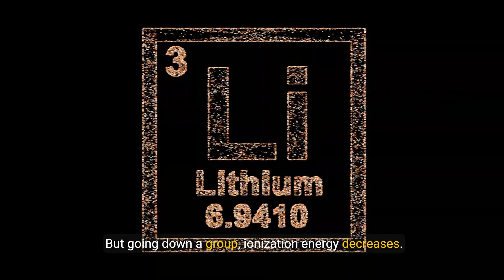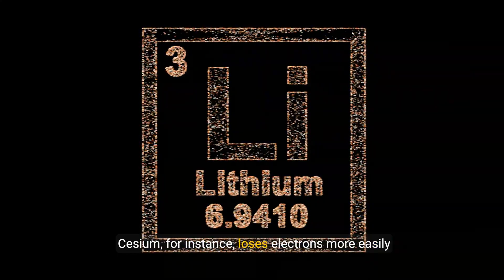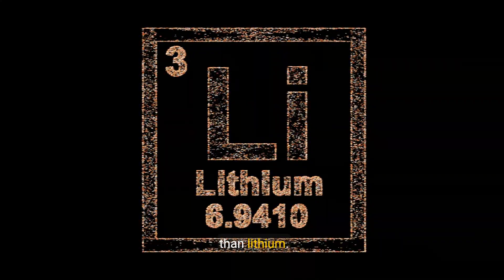but going down a group, ionization energy decreases. Cesium, for instance, loses electrons more easily than lithium.